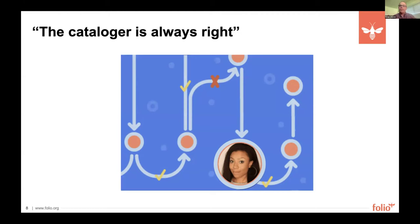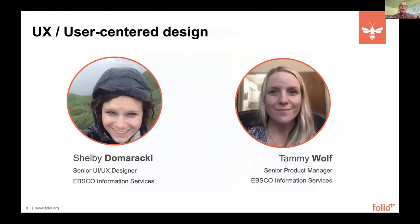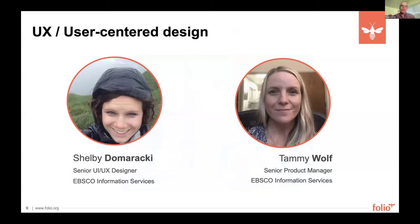The idea behind 'The Cataloger is Always Right' is that while we're looking at systems and how the application needs to work, we don't want to lose sight of the most important end user — the cataloger themselves. At some point during the project, we realized it was super important for us to invest in a UX team so we could really understand how this system would be used by catalogers. We brought in two folks from EBSCO's UX team: Shelby Domoroski, senior designer, and Tammy Wolf.